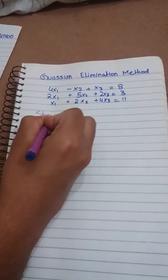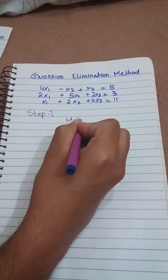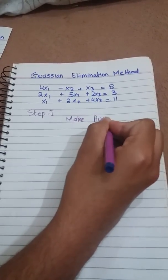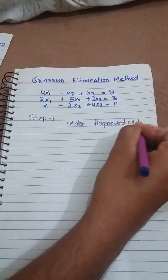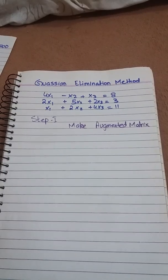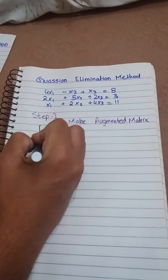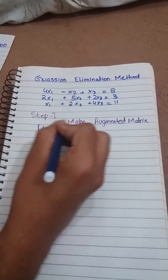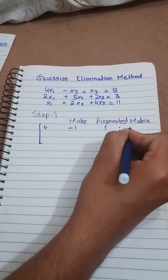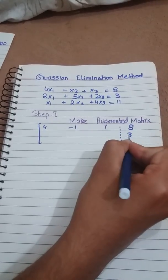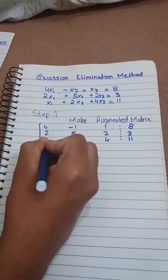Step one is make augmented matrix. To make this: 4, -1, 1, and this is the part for the B: 8, 3, 11, 2, 4, 5, 2, 2, and 1.